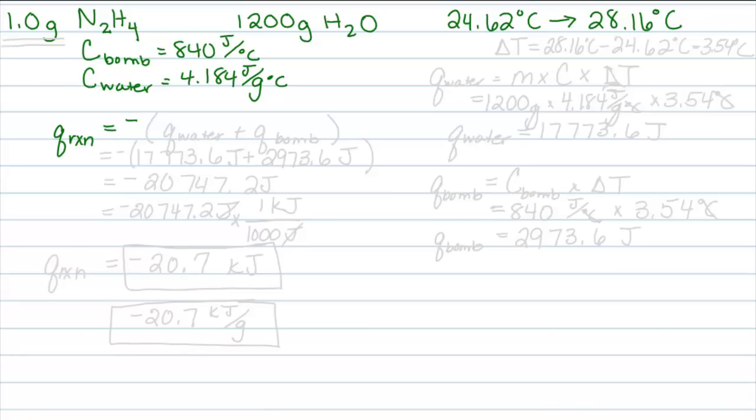We know that's going to be the opposite, that's where the negative sign comes from because it's the opposite direction for the Q of the water plus the Q of the bomb. Unlike in coffee cup calorimetry, in bomb calorimetry, we must include how much energy was absorbed by that bomb calorimeter itself.